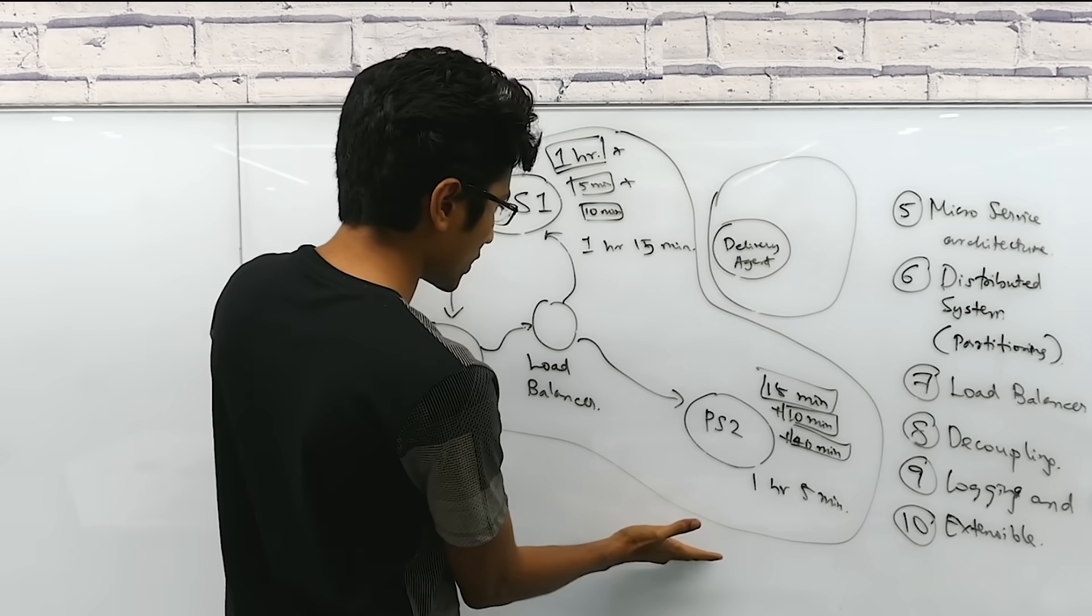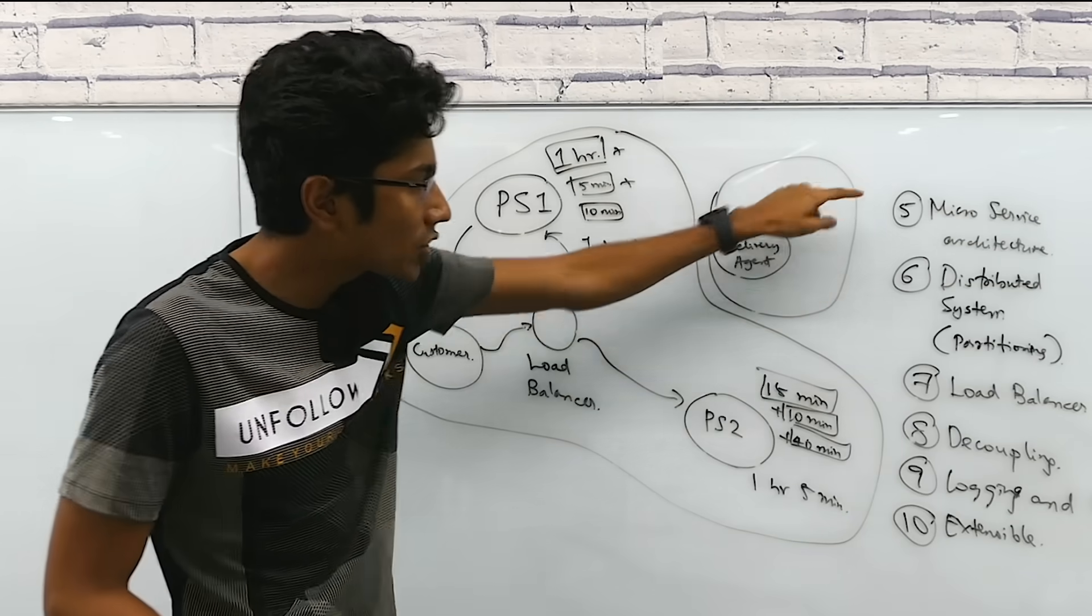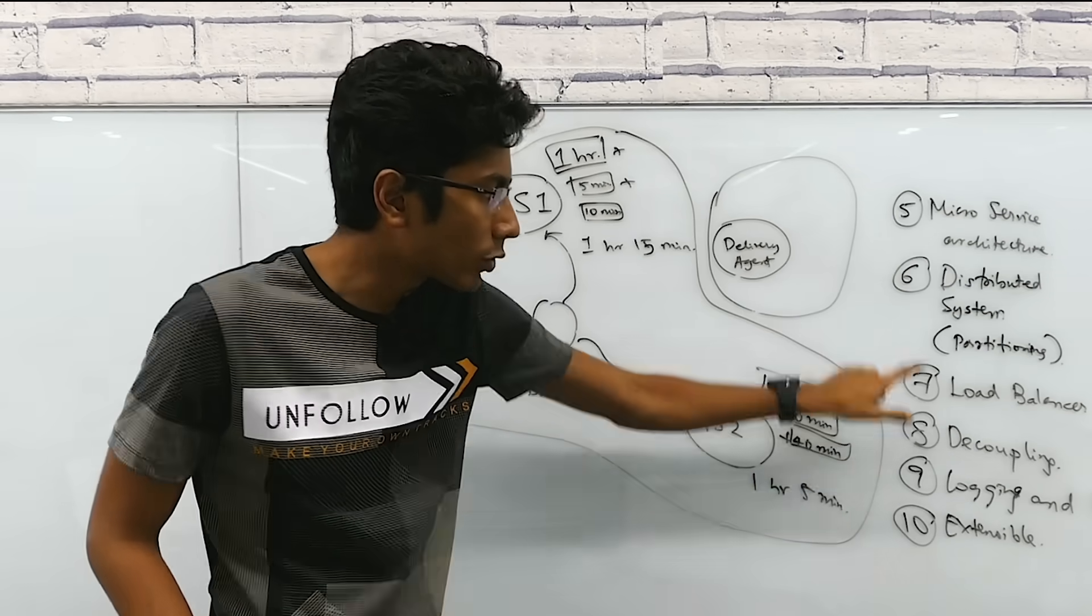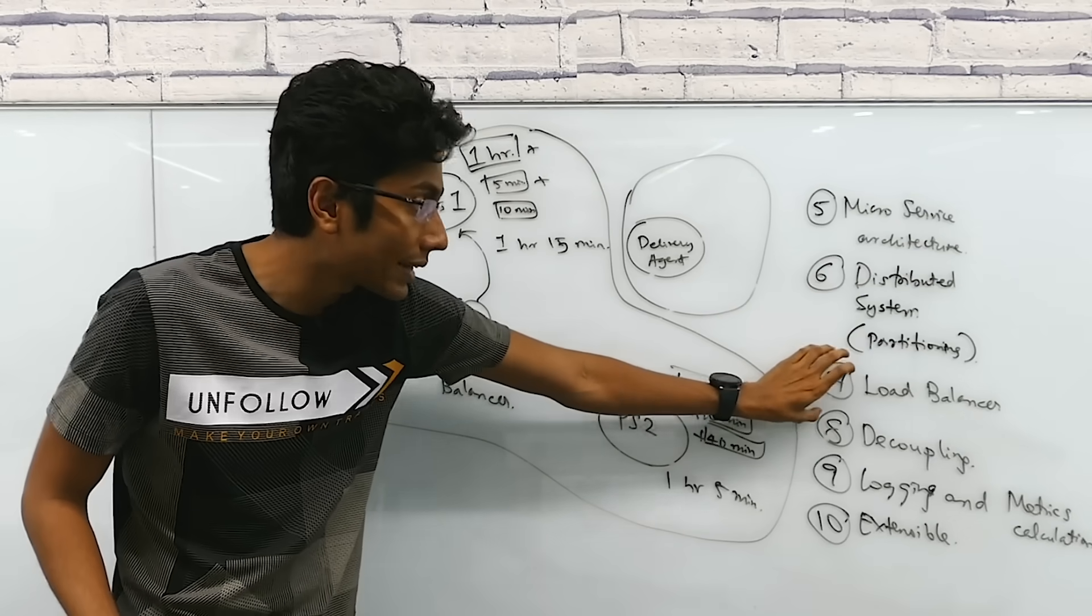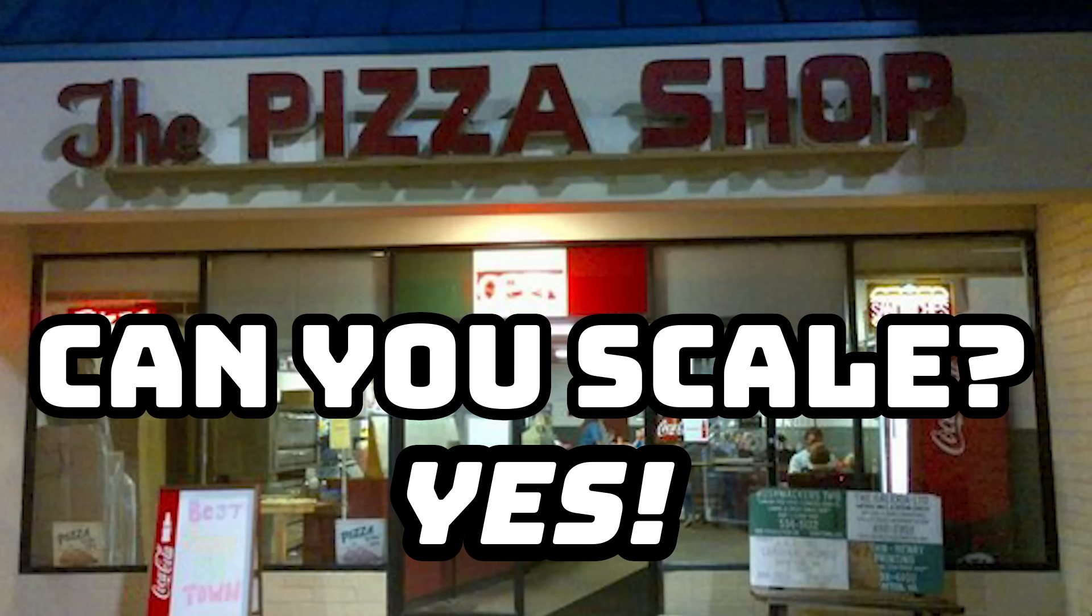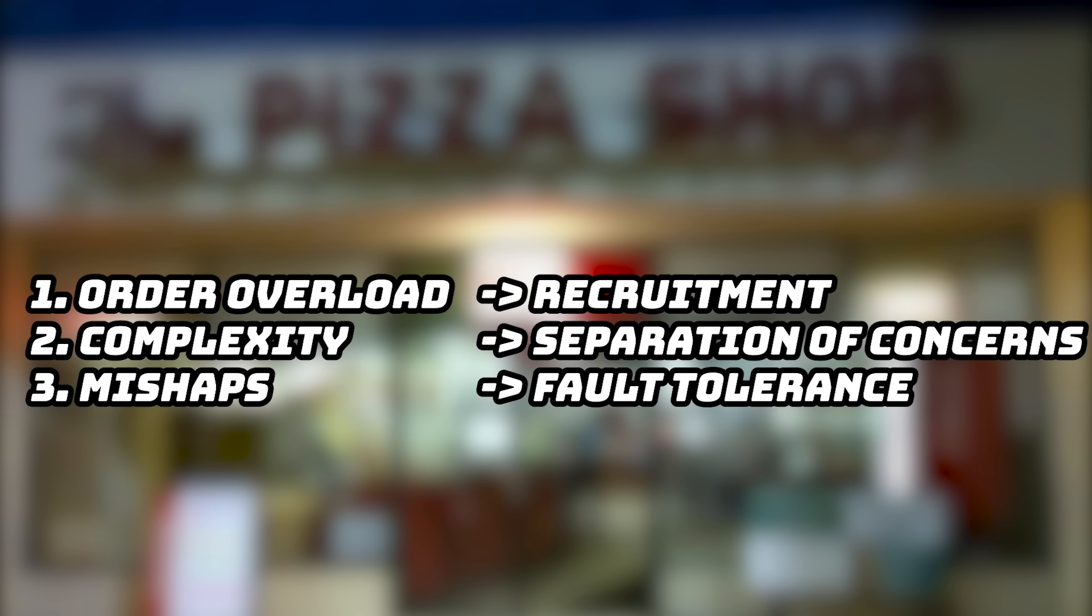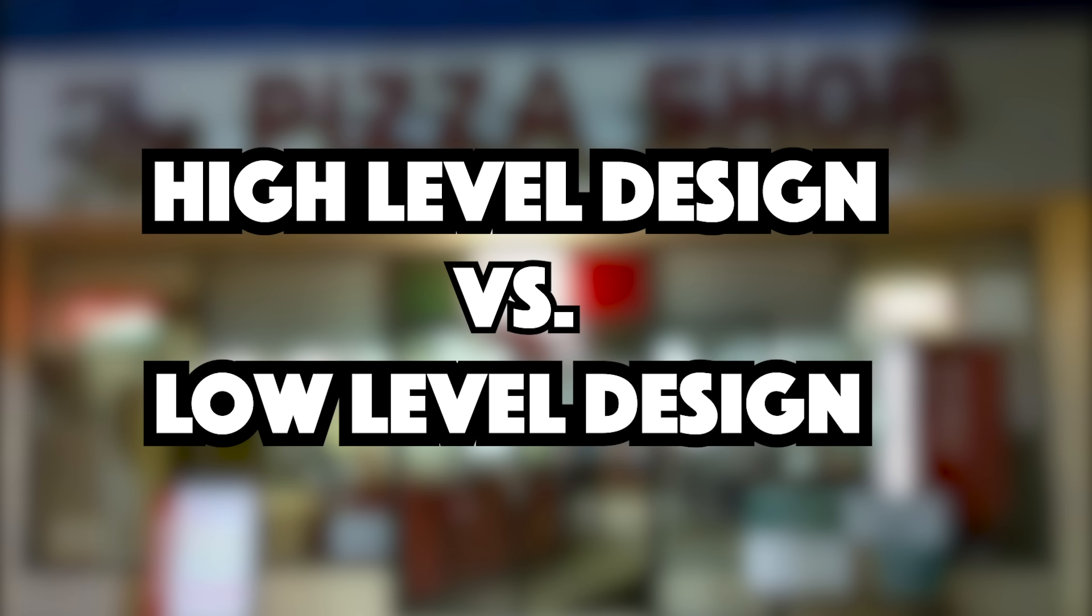What we have done is taken a business scenario, try to find solutions to all the problems that it came up with. And then just map them into technical terms. Now if you think of these, they are solutions in themselves. For the technical counterparts of these problems. Finally, we have managed to scale our restaurant. At a high level, we can now define what kind of problems we face and how we'll be solving them. This is known as high level design. There's a counterpart to this which is called low level design. Let's briefly talk about that.